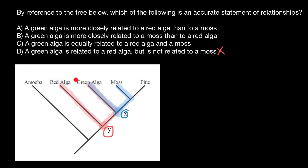As you see, both of them have the name 'alga,' but actually green alga is much closer to moss than to red alga. Hence the correct answer is going to be answer B: a green alga is more closely related to a moss than to red alga.